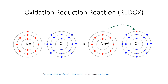To understand the electron transport chain, you must understand oxidation-reduction reactions. An oxidation reaction always involves an atom or molecule losing electrons, while a reduction reaction always involves a molecule or atom gaining electrons.